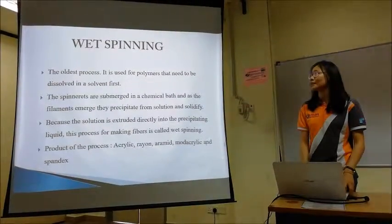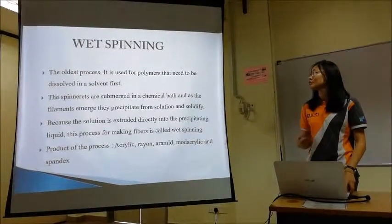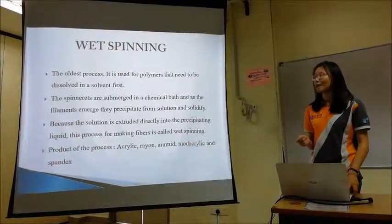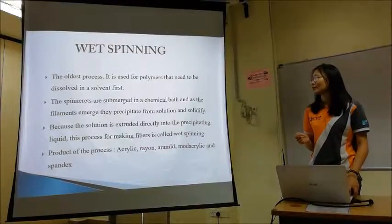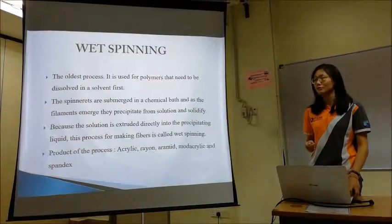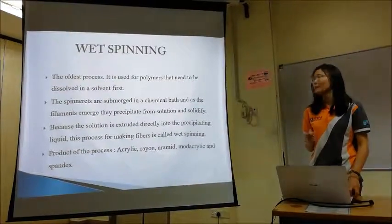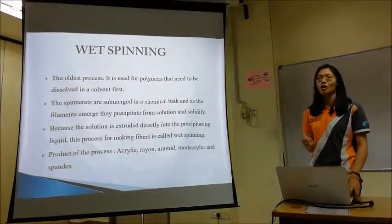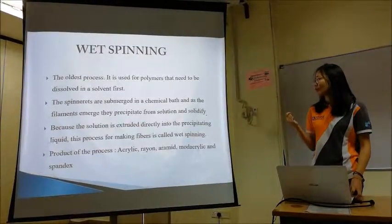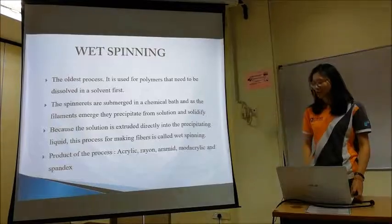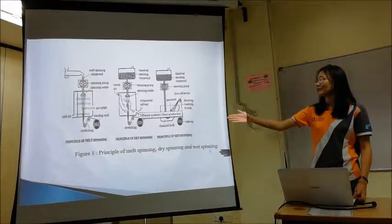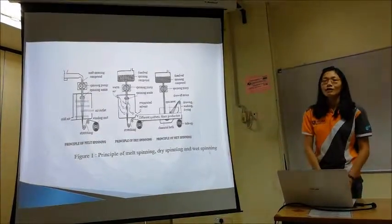Lastly is wet spinning. This is the oldest process, used for polymers that need to be dissolved in a solvent first. The spinnerets are submerged in a chemical bath and as the filaments emerge, they precipitate from solution and solidify. Because the solution is extruded directly into the precipitating liquid, this process is called wet spinning. Products of this process include rayon, aramid, acrylic, and so on. This is the figure for the three production processes: melt spinning, dry spinning, and wet spinning. That's all from me, thank you.